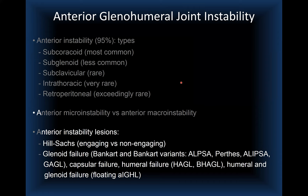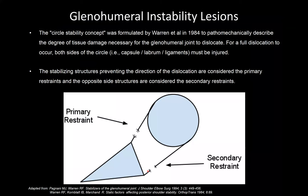The classic anterior instability lesions include the Hill-Sachs lesion on the humeral head side, and Bankart and Bankart variants on the glenoid side. Failure can also occur on the humeral side or on both sides. We will go through all of these injuries.